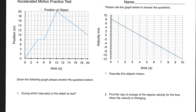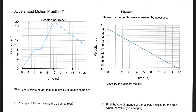Looking at this graph, I can immediately tell that the object changes velocity abruptly — the velocity during different sections is different. There are abrupt changes in velocity, not measured and smooth changes. The fact that the graph is flat here is a signal that the object is at rest — the position doesn't change. So the answer to 'during which interval is the object at rest?' would be from four seconds to six seconds.